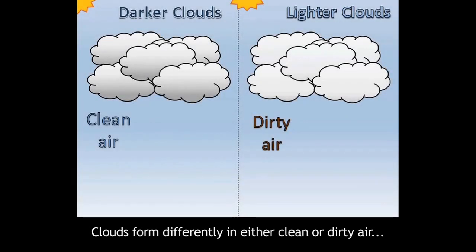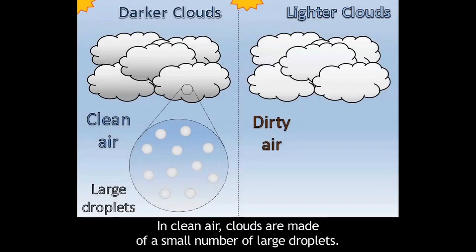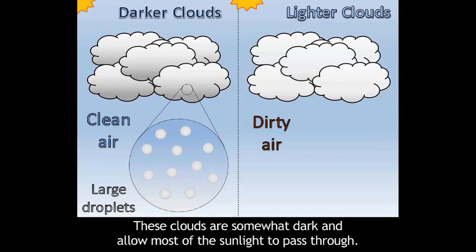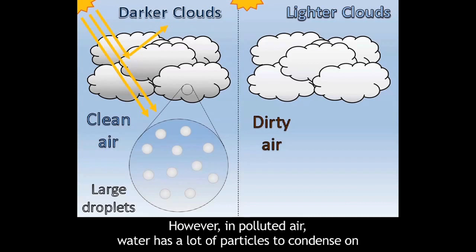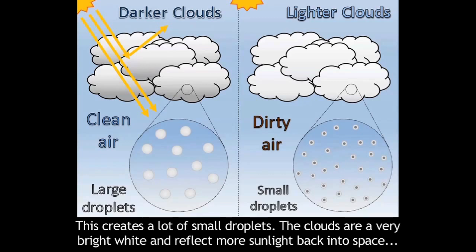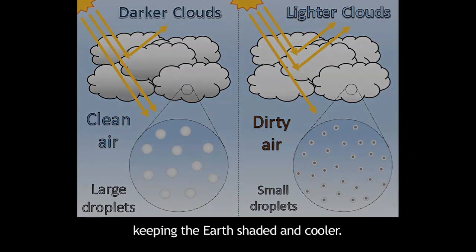Clouds form differently in either clean or dirty air. In clean air, clouds are made of a small number of large droplets. These clouds are somewhat dark and allow most of the sunlight to pass through. However, in polluted air, water has a lot of particles to condense on, creating a lot of small droplets. The clouds are very bright white and reflect more sunlight back into space, keeping the Earth shaded and cooler.